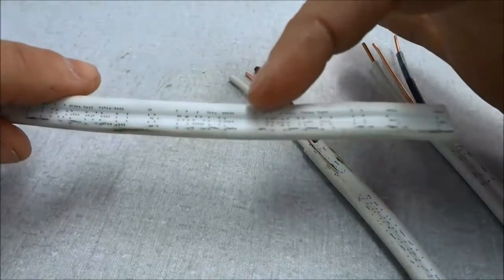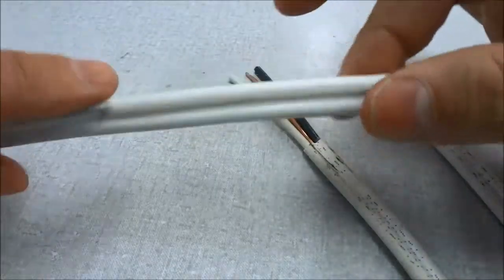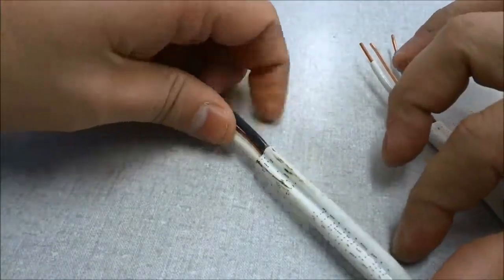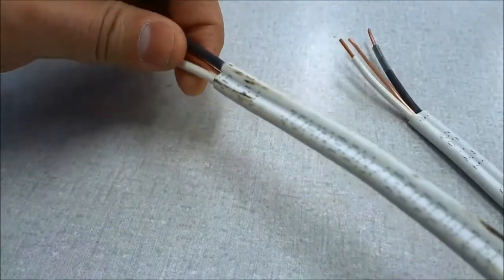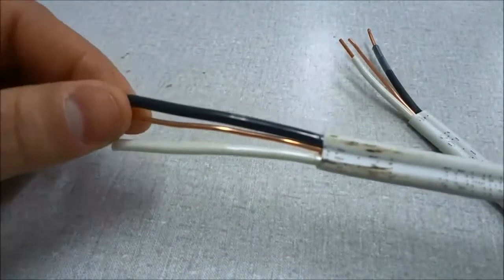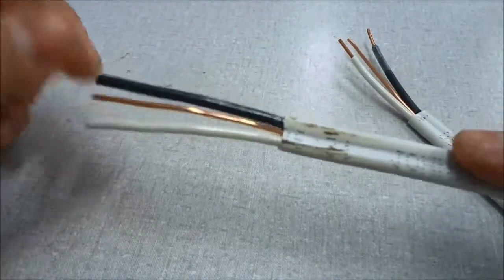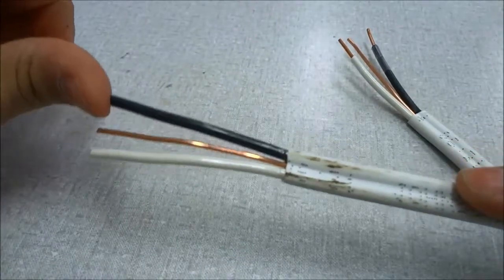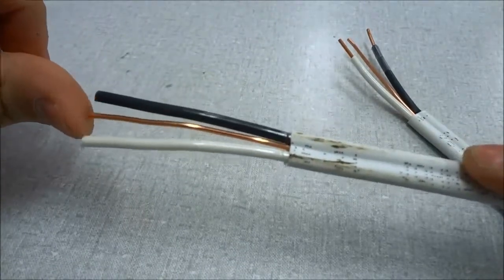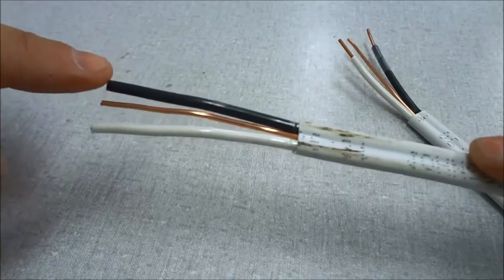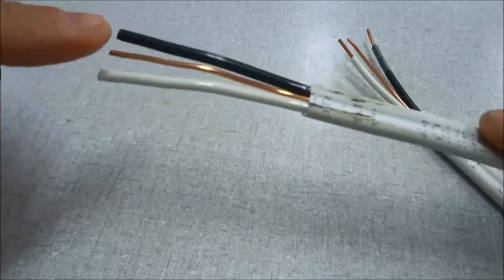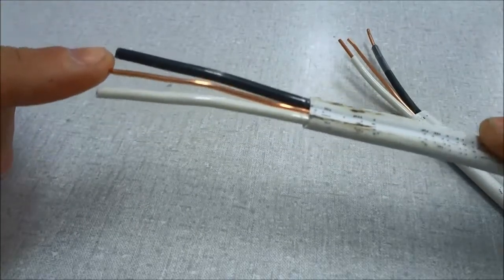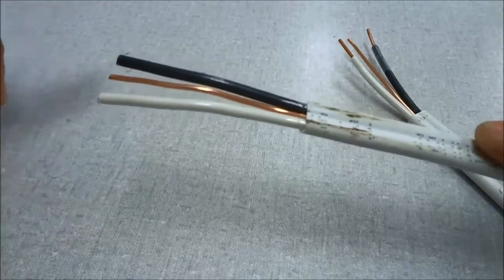Now once we strip off the white insulation right here, you will see something like this. If you take a look right here, there are three wires inside the white outermost insulation. There's a black wire, an uninsulated wire, and then a white wire. The black wire is the hot wire. The uninsulated wire is the ground. And the white wire is the neutral wire.